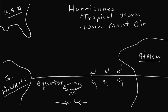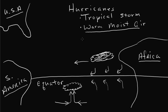What we end up with, with a tropical storm, because it is so warm and so moist, we get these monstrous storms called a tropical storm. It travels along the equator and just continues to feed from this never-ending supply of warm, moist air. The warm, moist air feeds it and feeds it.